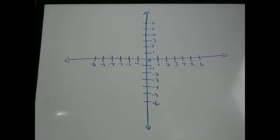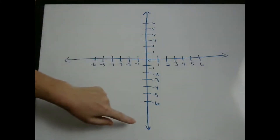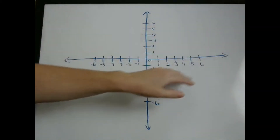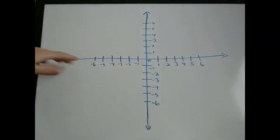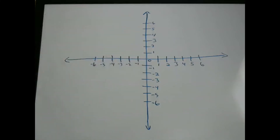We're going to talk about coordinates and plotting points. Here is your typical coordinate system, where you have a vertical axis and a horizontal axis. Notice that these are lines, so they extend into infinity. And in the middle of that, where the two lines cross, you have what's called the origin, or the 0, 0 point.